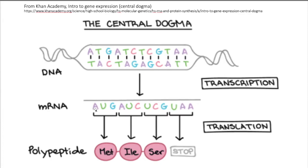From the messenger RNA, proteins can be made by incorporating amino acids for each of the triplet codons. This translation is done on ribosomes. A, U, G — these three bases code for a methionine. The next three bases would code for an isoleucine, etc., until we get to a termination codon, which doesn't code for an amino acid.